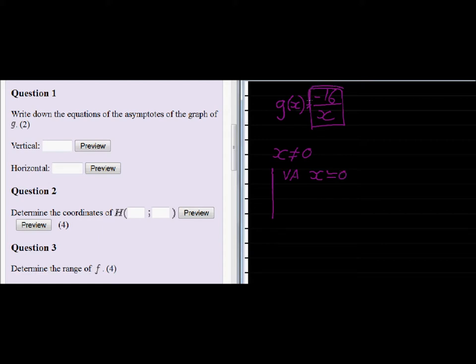We also know that since the numerator is not equal to 0, this fraction can never equal 0. I am dividing negative 16. No matter what I divide with, I will never get an answer of 0. So the horizontal asymptote, the y value will never be equal to 0. So we can put that in. The vertical is x is equal to 0, and the horizontal y is equal to 0.